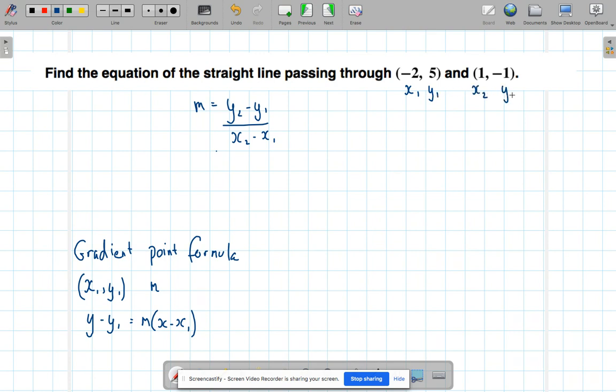We're now going to find the gradient by substituting into the formula. y₂, which is -1, minus y₁, which is 5, over x₂, which is 1, minus x₁, which is -2. So minus -2, we're going to be careful here with our positives and negatives. So -1 take 5 is -6 over 1 minus a minus, so that's a positive, 1 plus 2 is 3. So our gradient is -2. -6 divided by 3, so I've done that by applying the y₂ - y₁ over x₂ - x₁ formula to those two points. So now I've got my m.